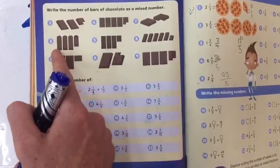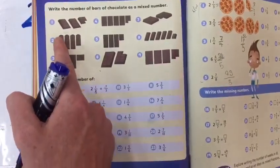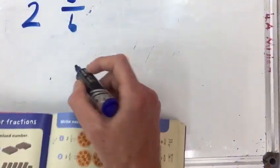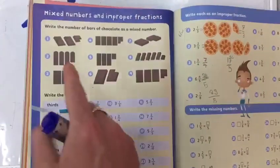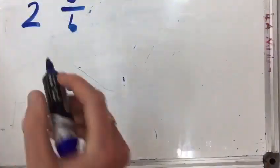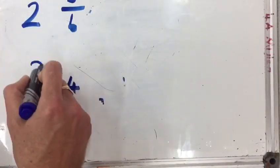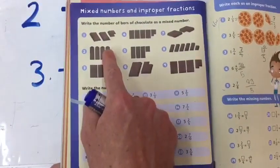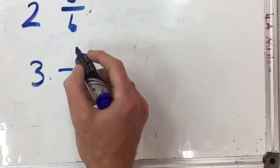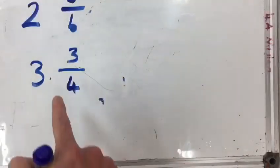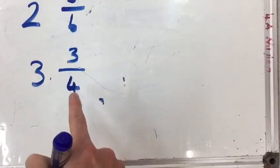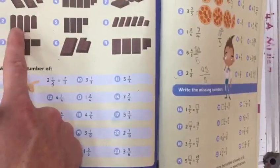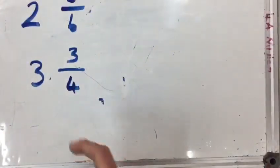For number 2, we can see the bars are split into 4, so our denominator will be 4. We can see we have 3 whole bars, so our whole number will be 3. And then for the last bar, we have 3 pieces out of the 4, so we put 3 as our numerator. The answer to number 2 will be 3 and 3 over 4.